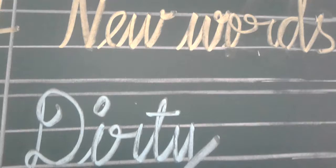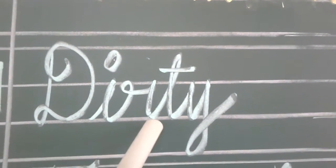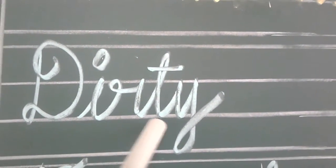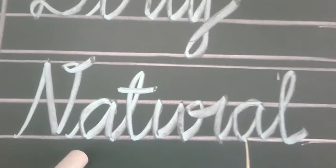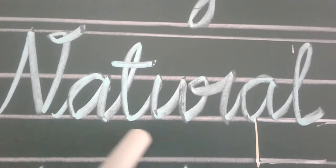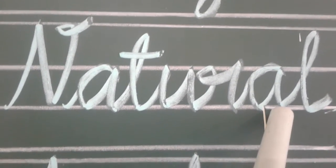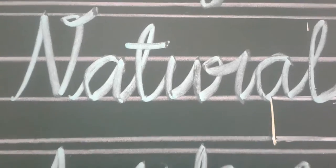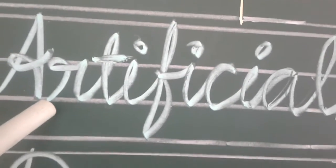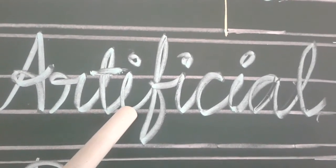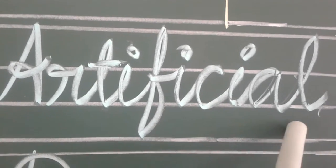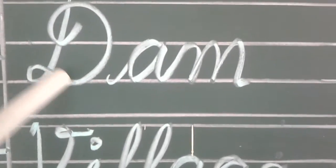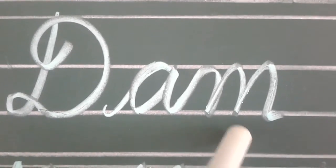Now, what's the spelling? Dirty? D-I-R-T-Y. Natural? N-A-T-U-R-A-L. Artificial? A-R-T-I-F-I-C-I-A-L. Dam? D-A-M.